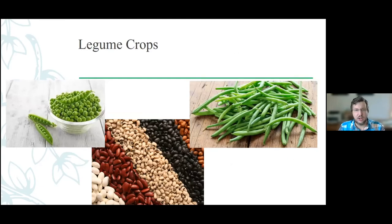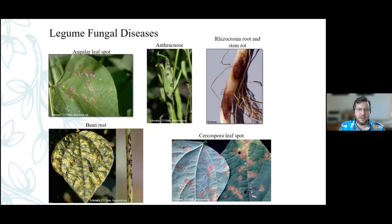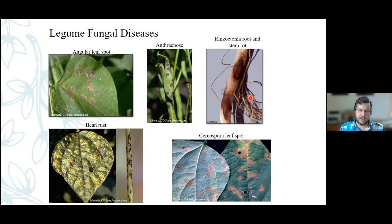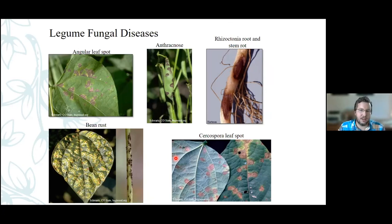On legumes — our beans and peas — the bigger issues are going to be angular leaf spots and anthracnose. These are going to be our big issues. Rhizoctonia root rot and stem rot tend to show up mostly where people have planted beans year after year. You really want to rotate those out. These diseases are going to be moved on wind and insects. Try to make sure you're doing as much cleaning and sanitation and getting a little bit better air space and spacing as much as possible.